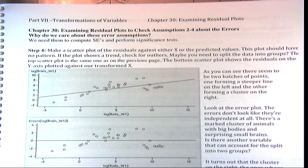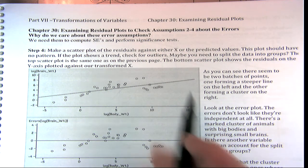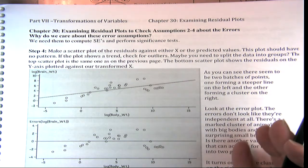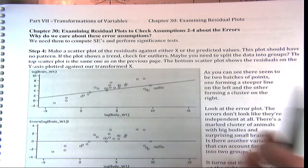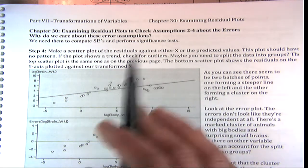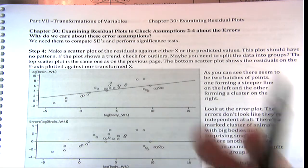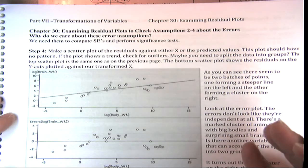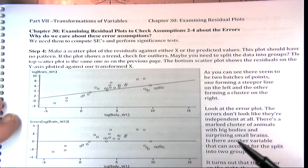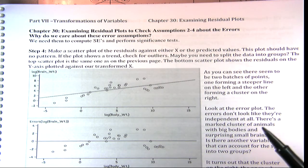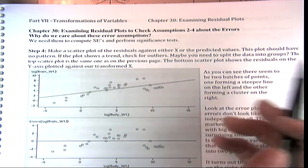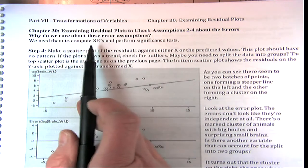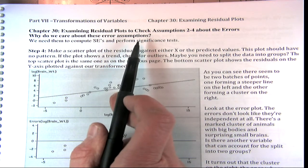Remember what we were doing last time? If we have a scatter plot that's not linear and we're doing regression and we want to do inference on it, we have to check those four assumptions. So why do we care about those error assumptions at all?